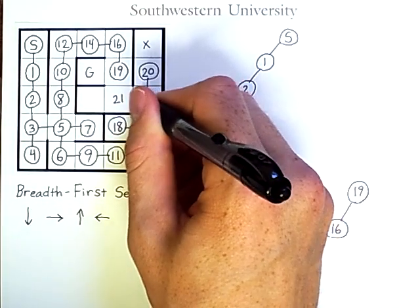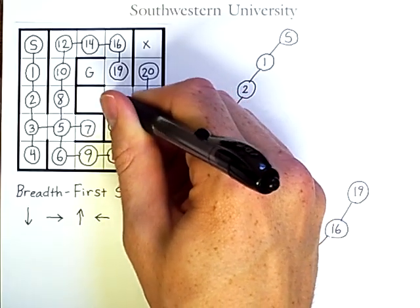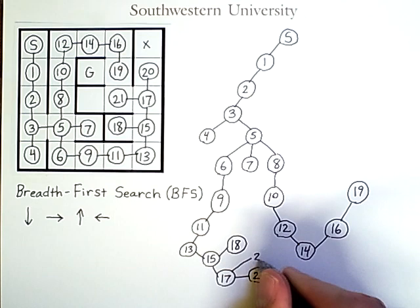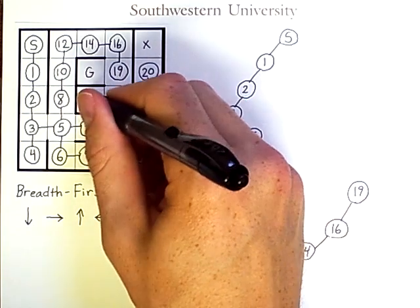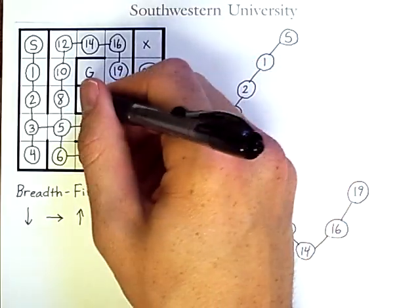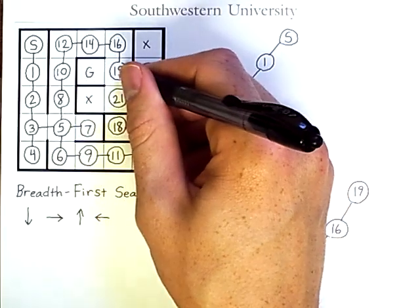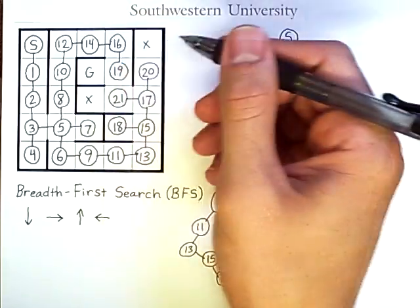Then, seventeen will search twenty-one, and it has this node as a successor, which we'll never get to, and this one we've already checked.